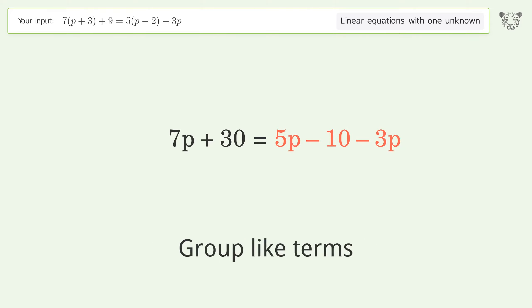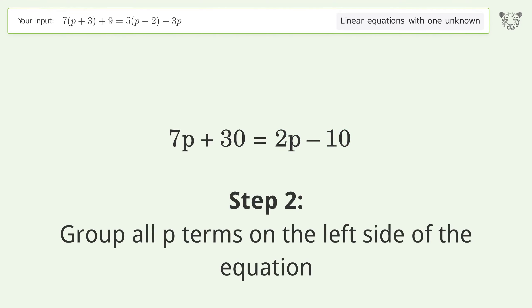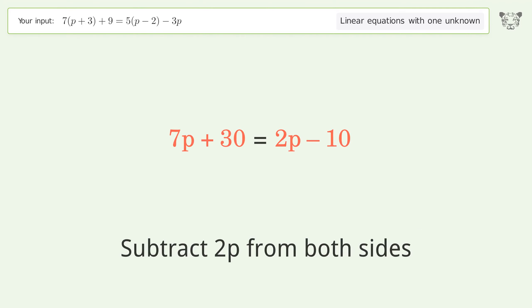Group like terms. Simplify the arithmetic. Group all p terms on the left side of the equation. Subtract 2p from both sides.